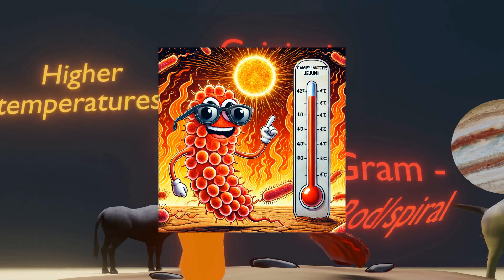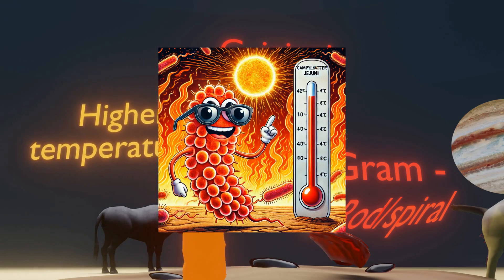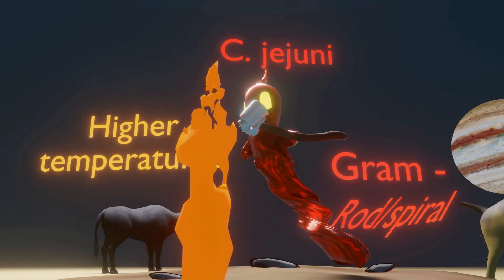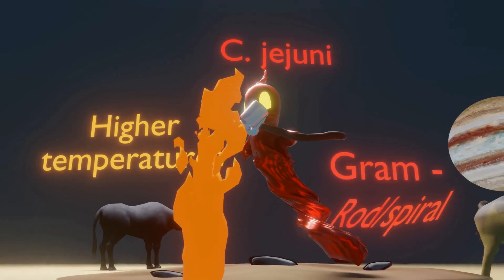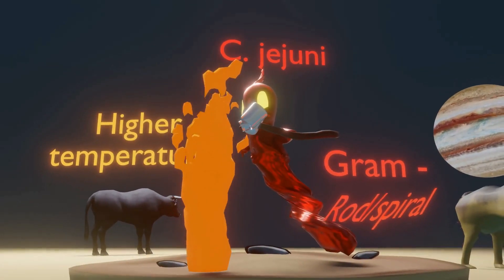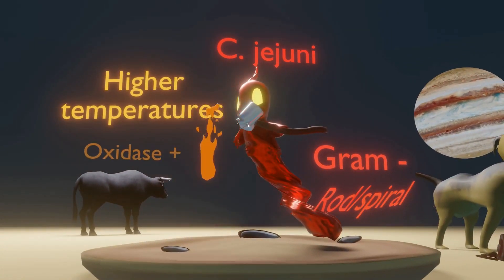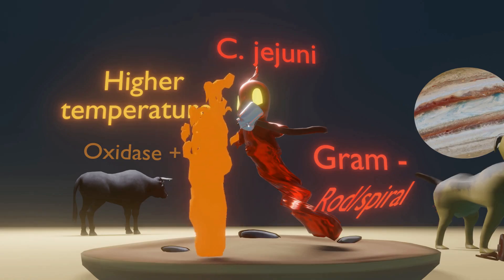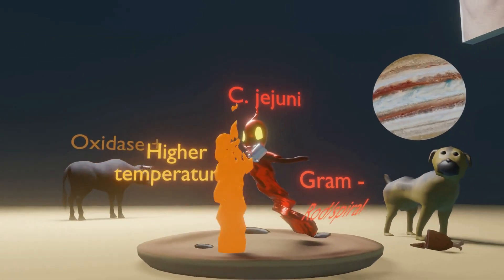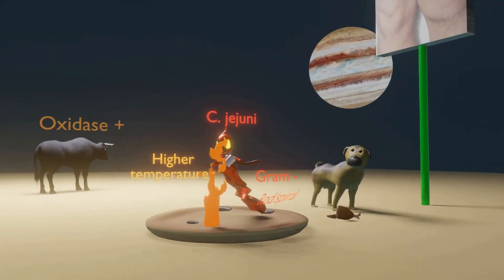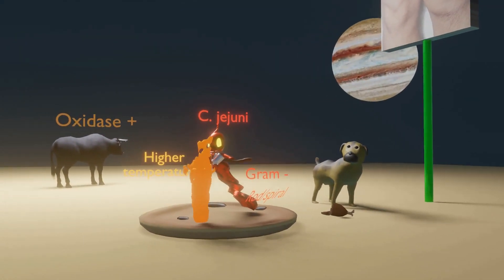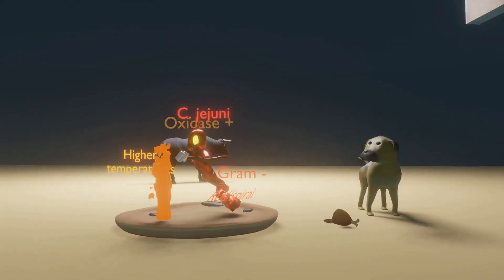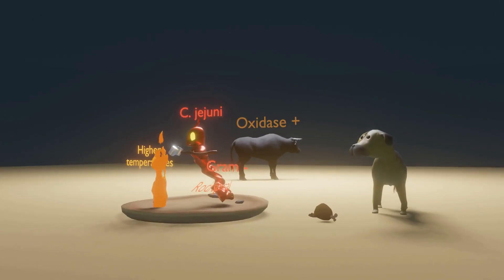For example, 42 degrees Celsius. The ox in the background reminds us of oxidase positive, as Campylobacter jejuni is oxidase positive.